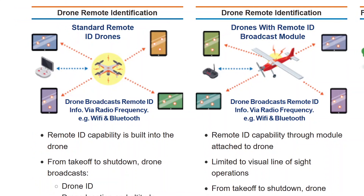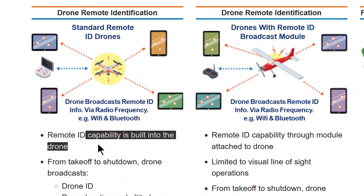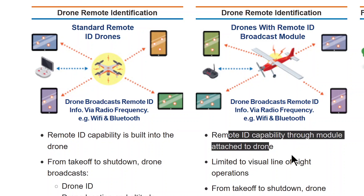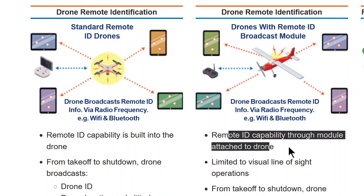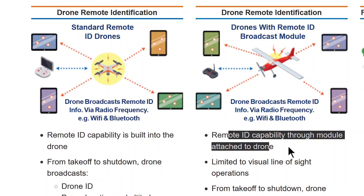The big difference between these options: standard Remote ID means the drone was built with the broadcasting capability already inside it. The Remote ID broadcast module is something attached to the drone after-market — this applies to users who recently bought a drone or don't want to upgrade, so they retrofit a broadcast module onto a drone that was built without one.